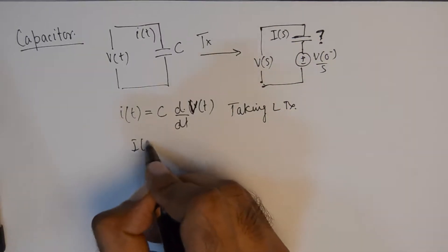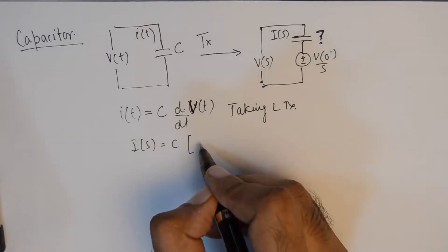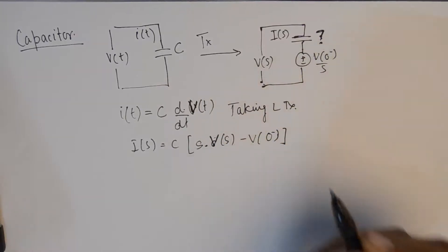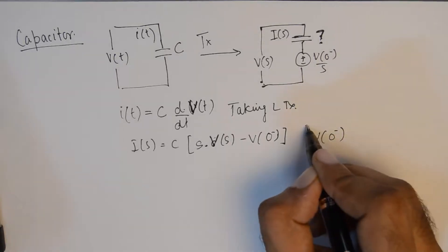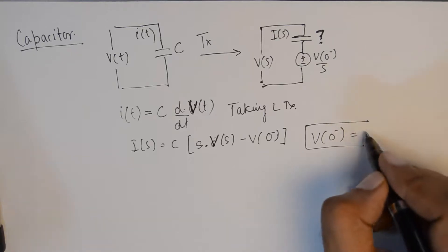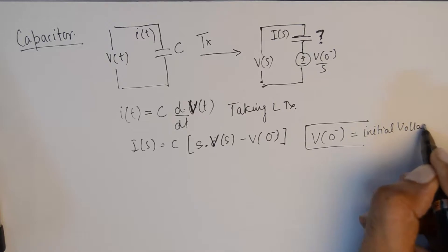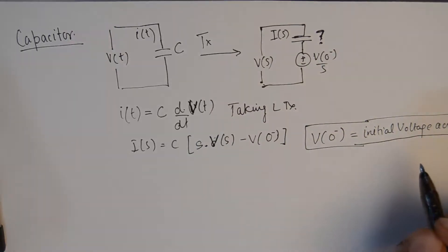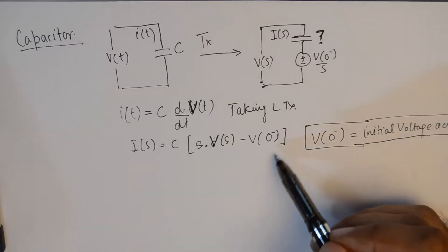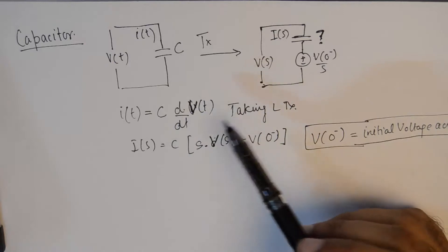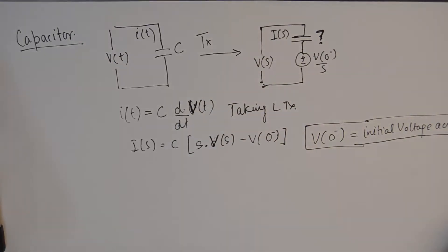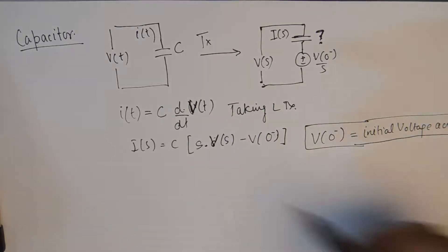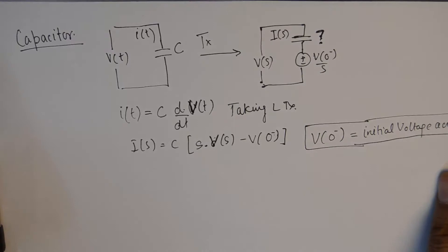Taking the Laplace transform gives us I(s) in terms of v(0⁻), where v(0⁻) represents the initial voltage across the capacitor. This is a corollary from the Laplace transform — the initial value theorem is applied here when we open up this differentiation to get the Laplace transform. The initial value of voltage needs to be put up here; you can look up this corollary in the properties of Laplace transform.